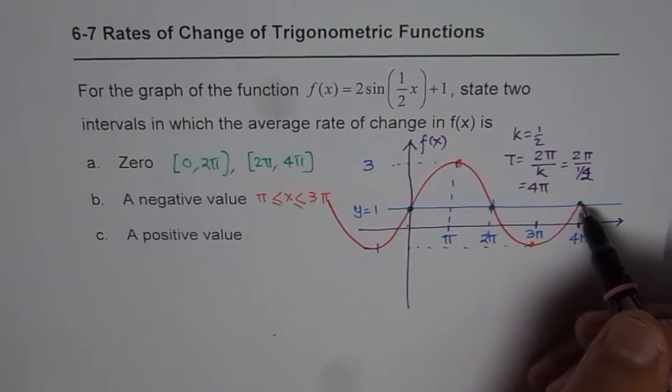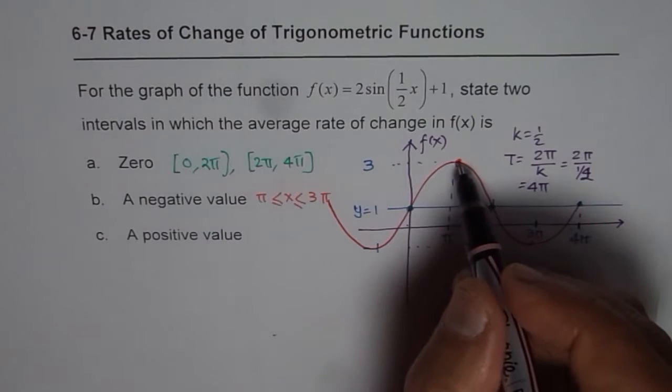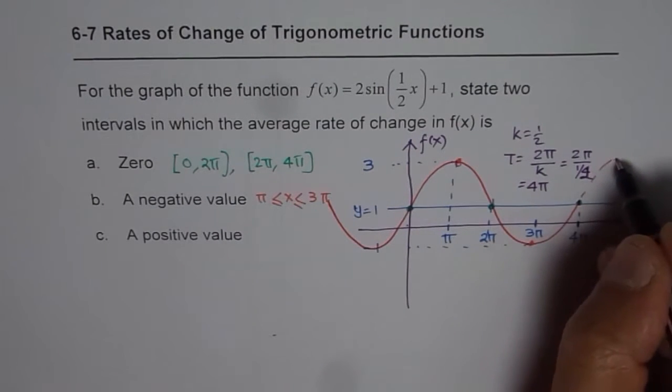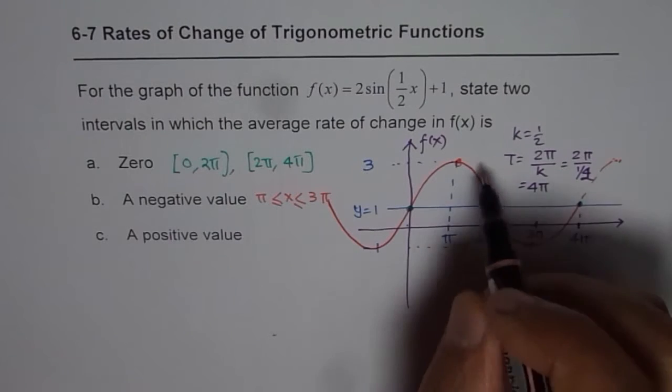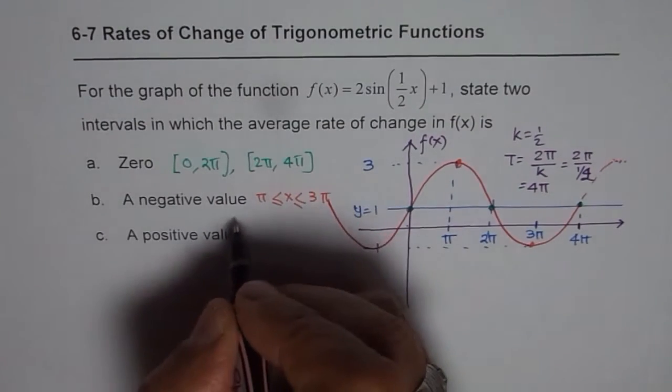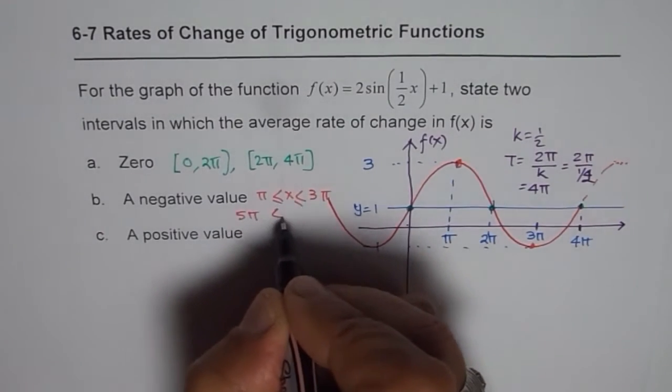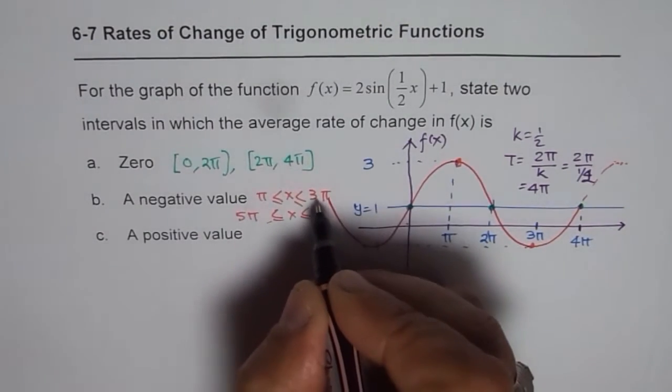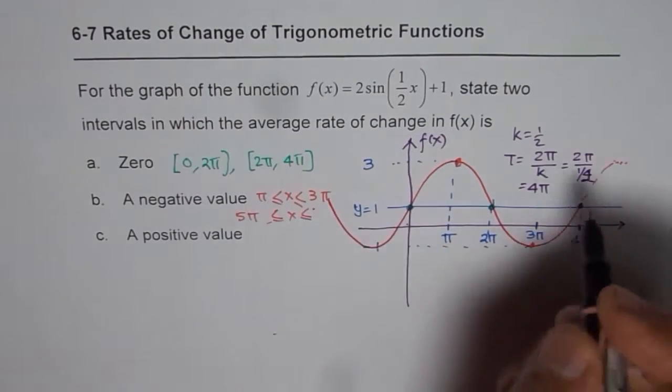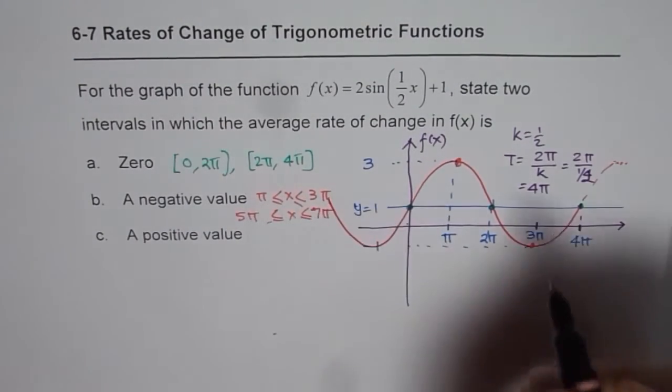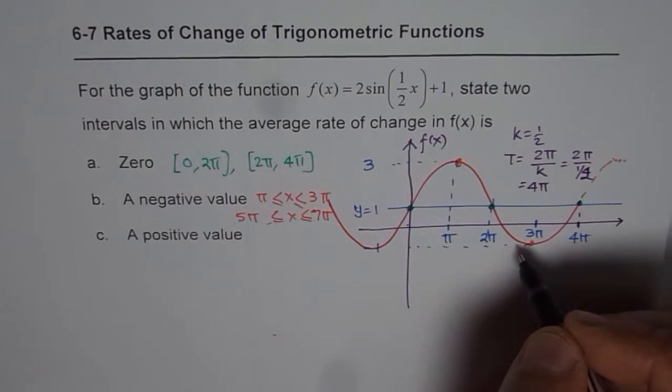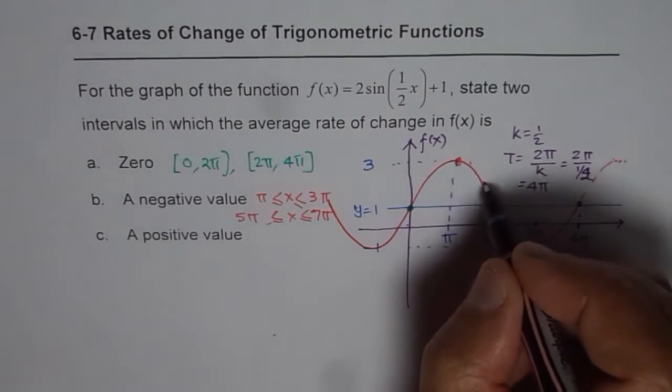The second one which I could take is, since the time period is 4 pi, we can always add 4 pi to these values. So the next point, of course, will be kind of like this. Do you see that? So pi plus 4 pi is 5 pi. So I could write 5 pi to, we are adding 4 here, so 4 plus 3 is 7, so 7 pi. So that is how anywhere in between, we are going to get negative value. So this is a negative slope.